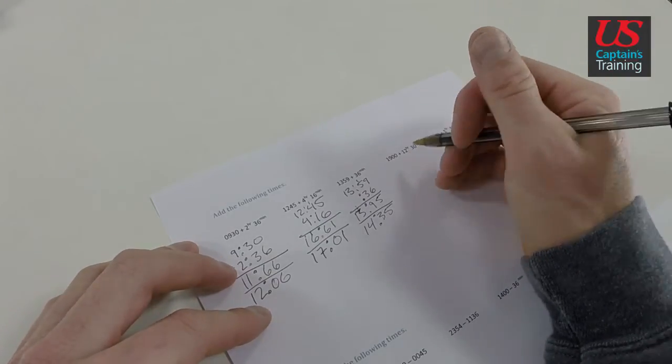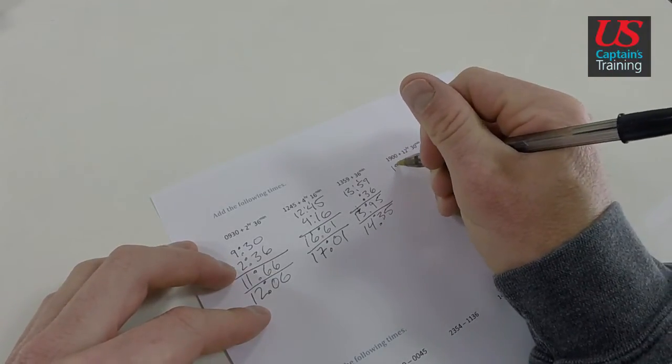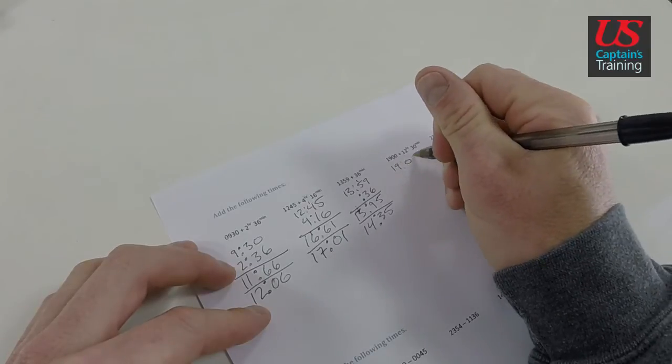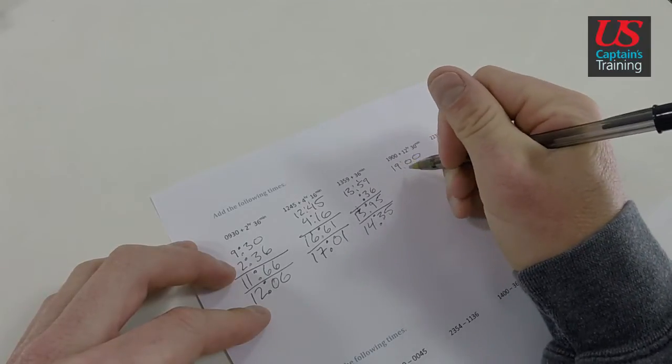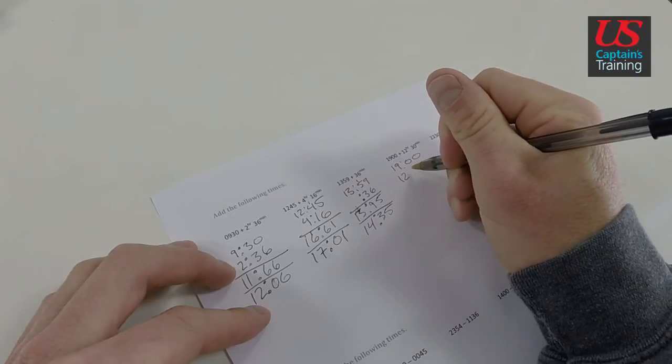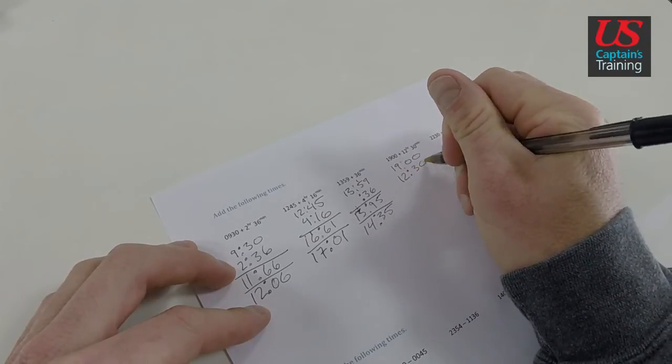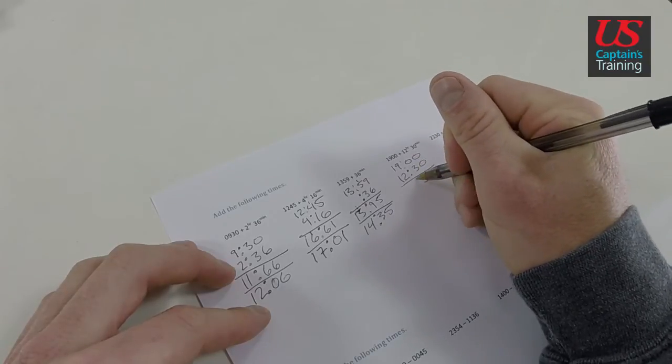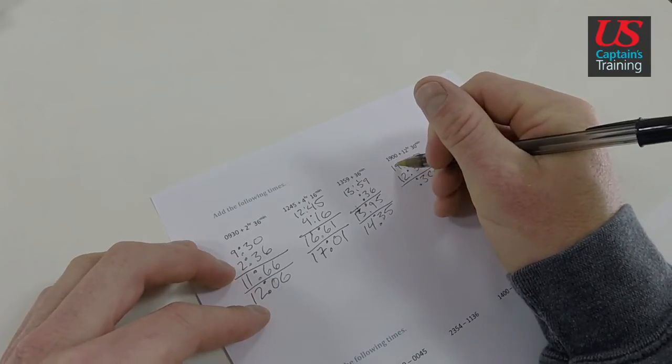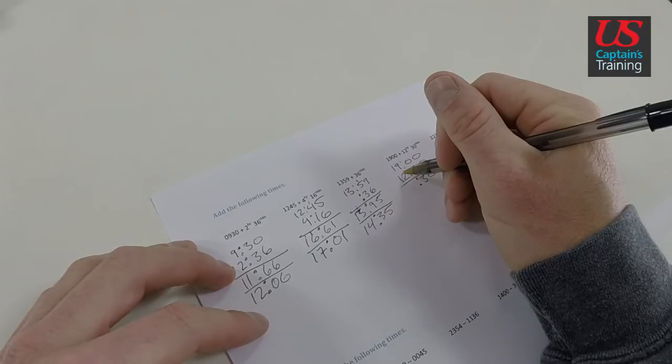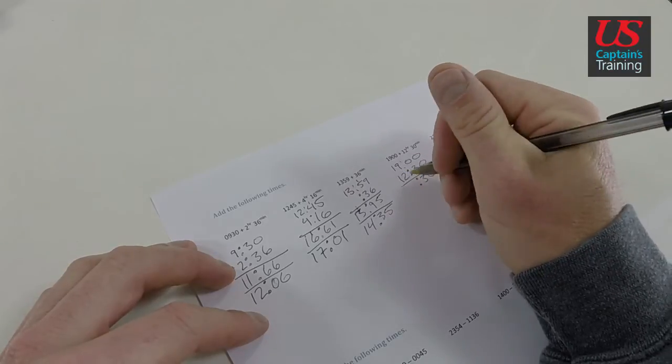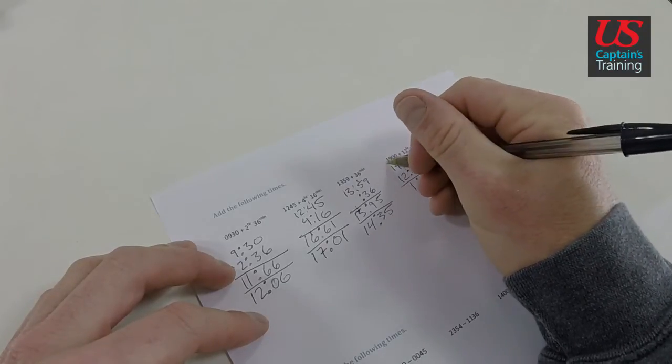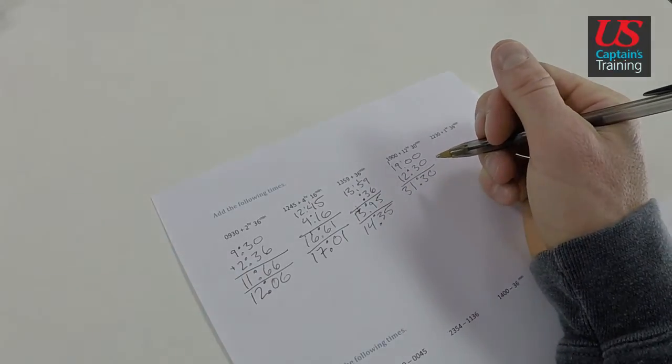And now let's look at this. 19 hours 0 minutes and 12 hours and 30 minutes. What do we get? 0 and 0 is 0, 0 and 3 is 3. 30 minutes. 19 and 2, there's 11, carry the 1. Look at that, 31 hours and 30 minutes. Now, very interesting.